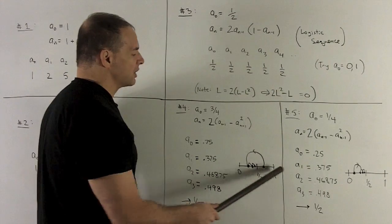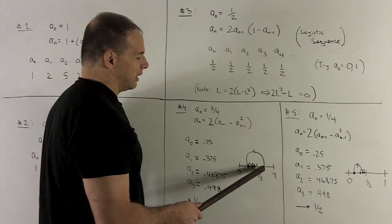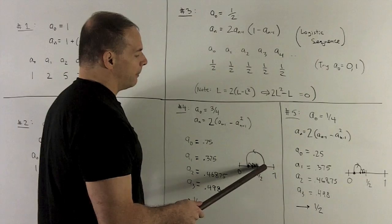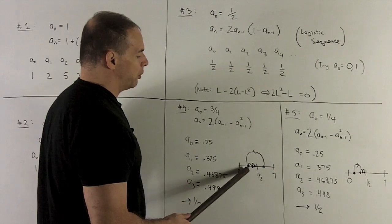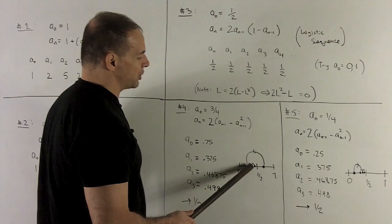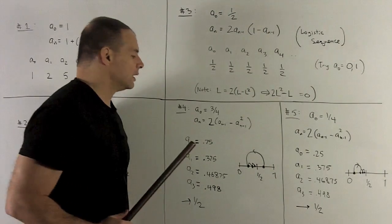So the picture of this, if I put everything on, say, the x-axis, well, that's going to be starting at 0.75. You're going to jump to 0.375, and then it just starts inching its way up to a half. So that's the picture.